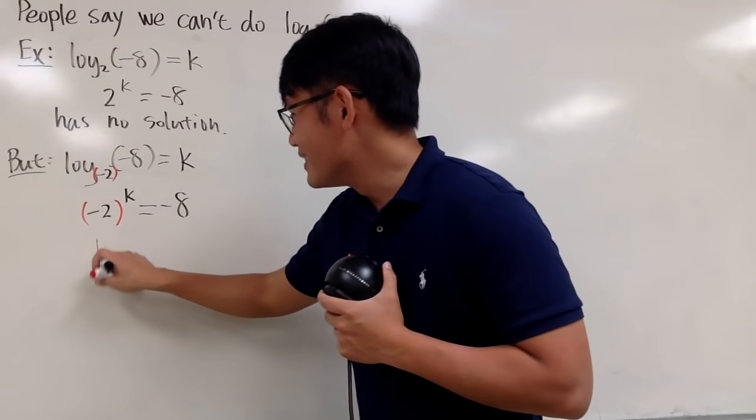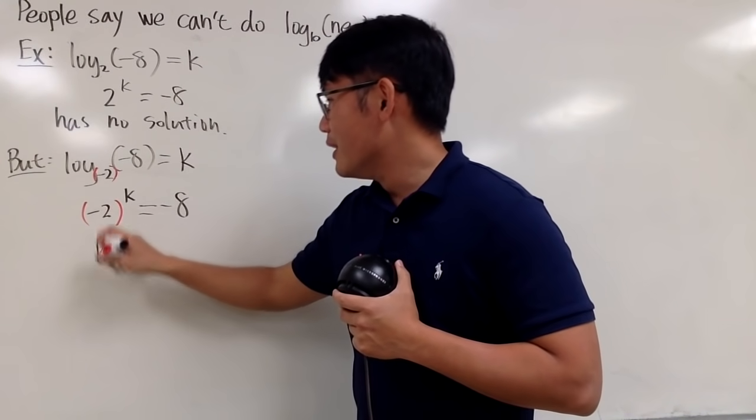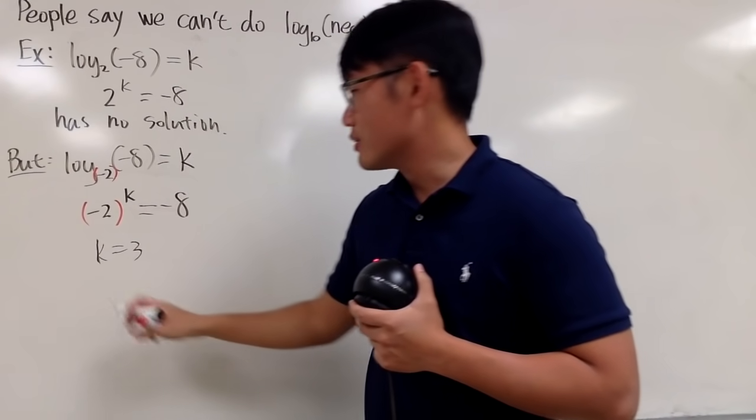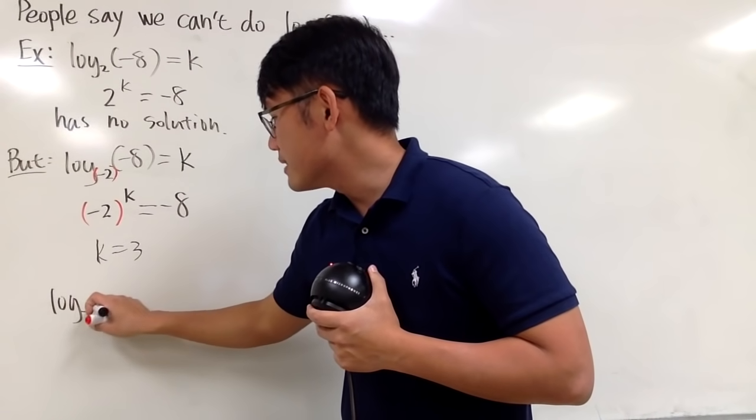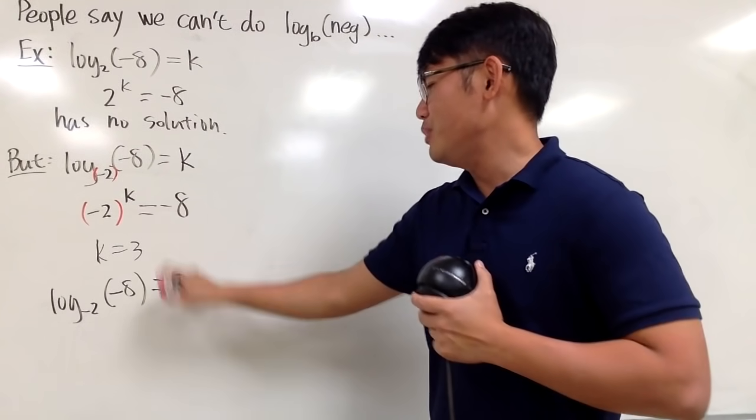Yes! So as you can see, k equals 3. Now we'll make this work. In another word, it seems like this is just equal to 3. So log base negative 2 of negative 8, we have a totally legitimate answer. It's just 3.